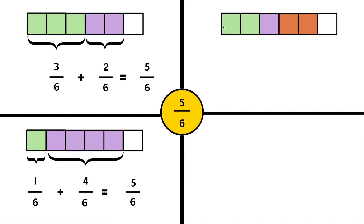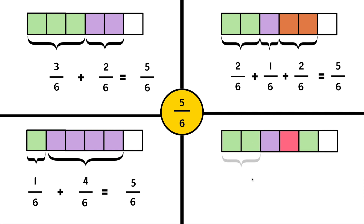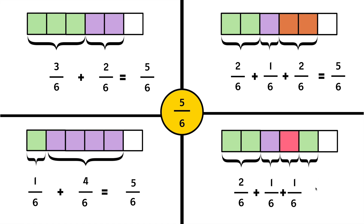Let's try another way. We can start with 2/6 plus 1/6 plus 2/6. 2 plus 1 plus 2 equals 5/6. Let's try one more way. We have 2/6 plus 1/6 plus 1/6 plus 1/6. We know that 2 plus 1 plus 1 plus 1 equals 5/6.